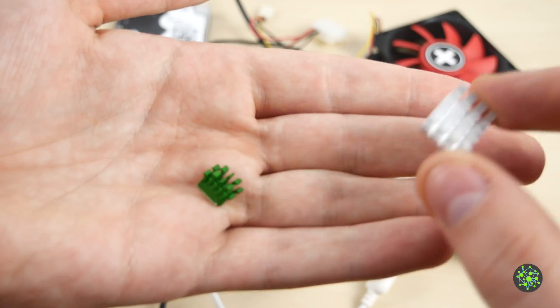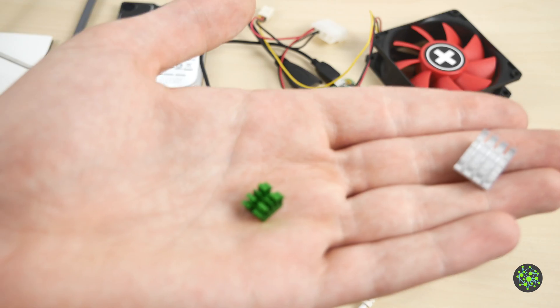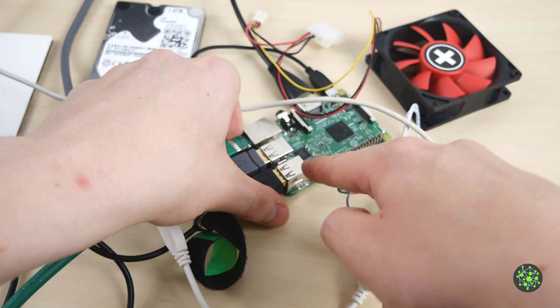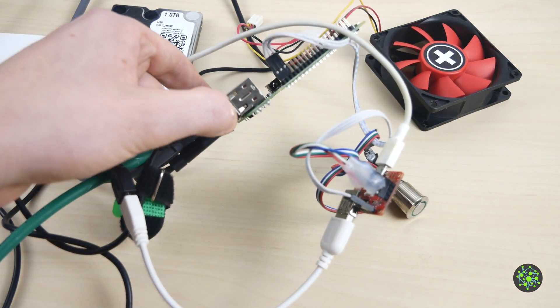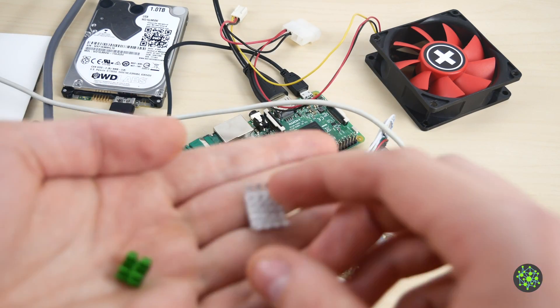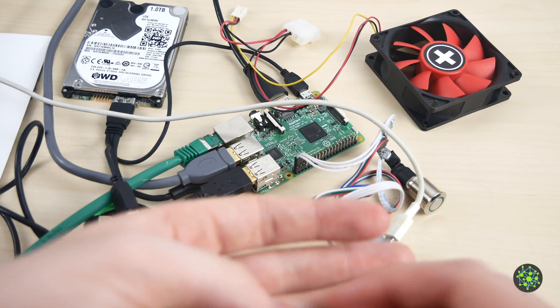We are going to start with the heat sinks. I will put this one on the CPU and the other one on the ethernet chip, which is located in the front. On the back side there is another chip, but that one doesn't need cooling.